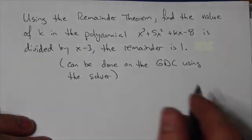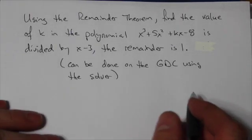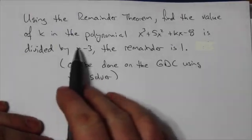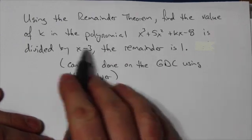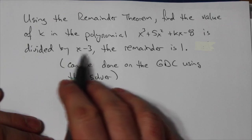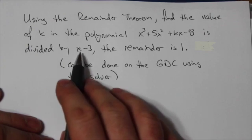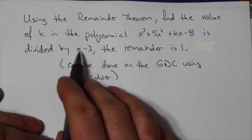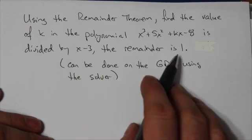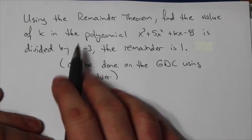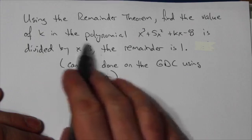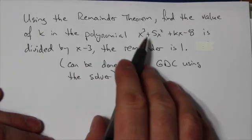Now using the remainder theorem, what that means here is when I'm dividing by this thing right here, I'm getting a 1 here. Well what that means is if I substitute in the value for the variable that makes the divisor 0, the whole thing should collapse to 1. So in this case here, if I let x equal 3, that makes this divisor here equal to 0. So that's the number I'm going to plug into here.